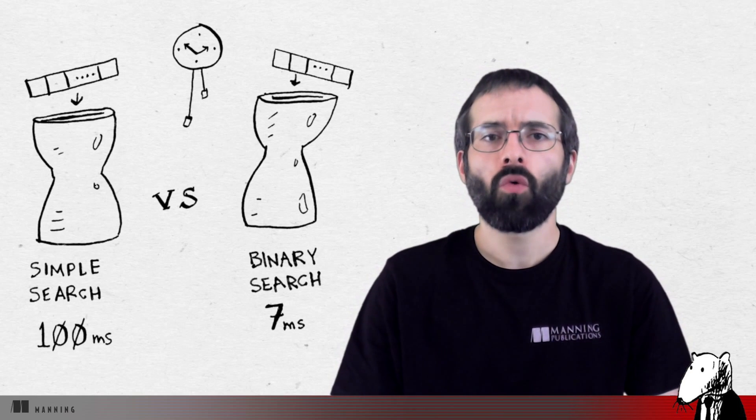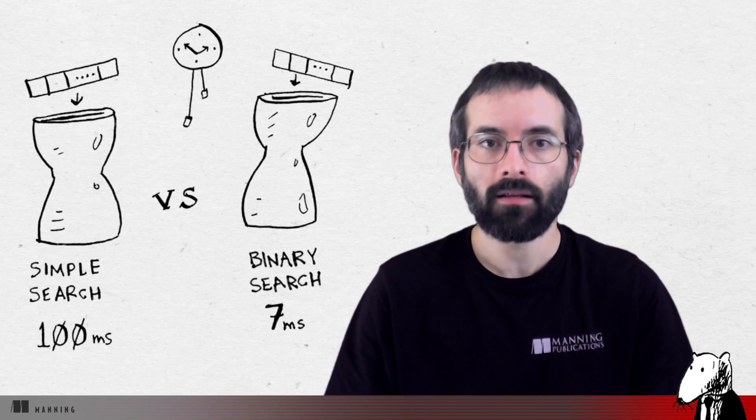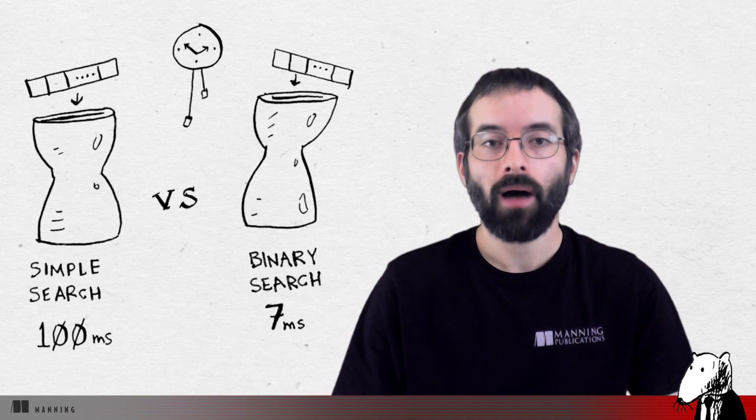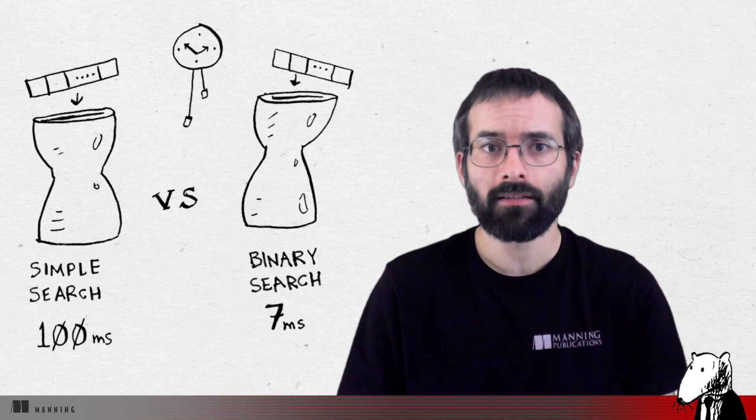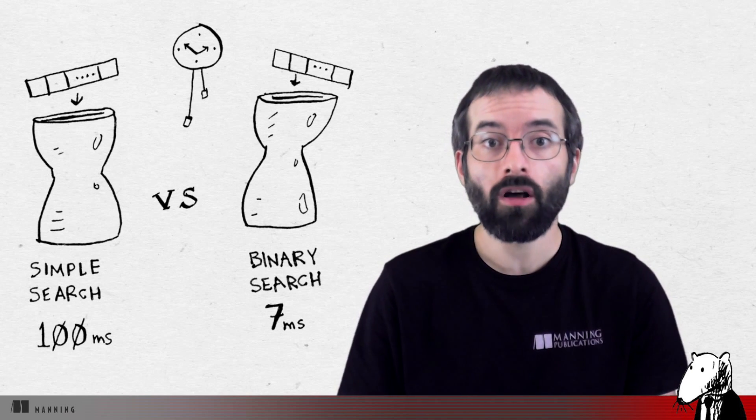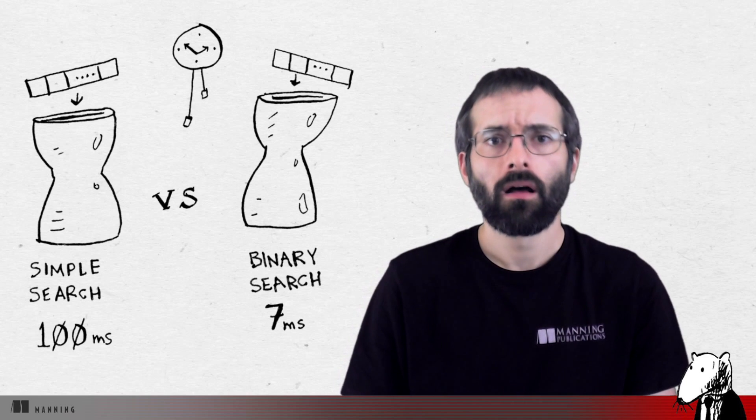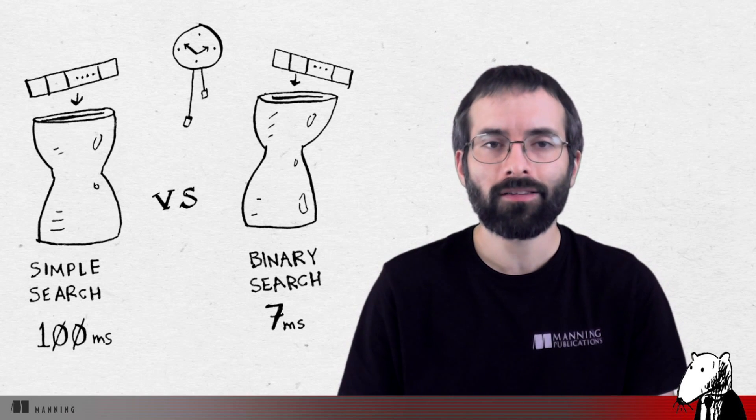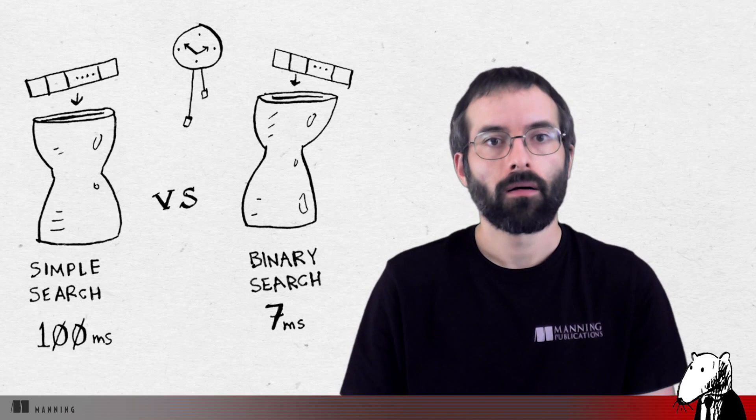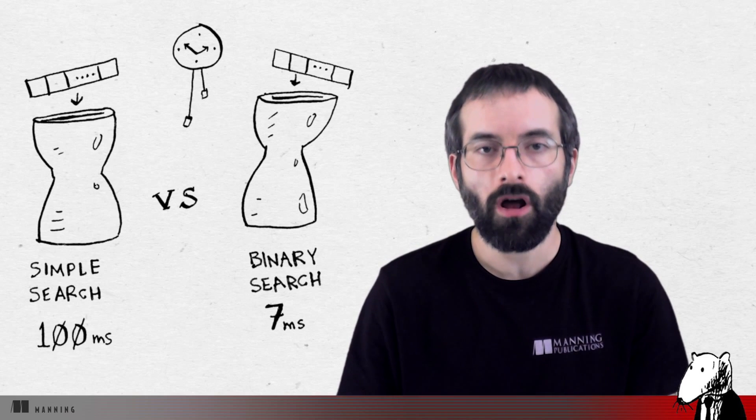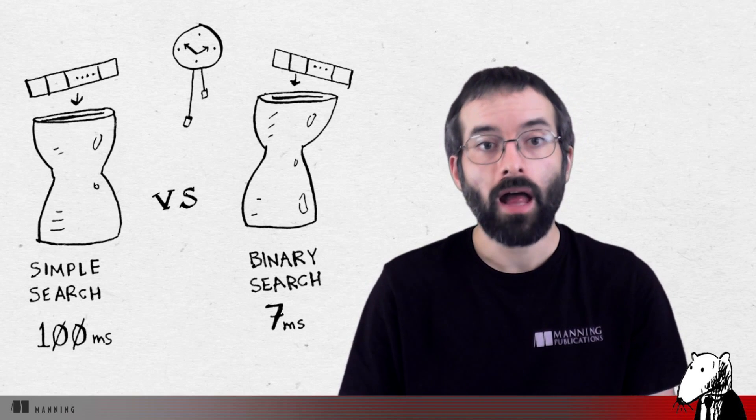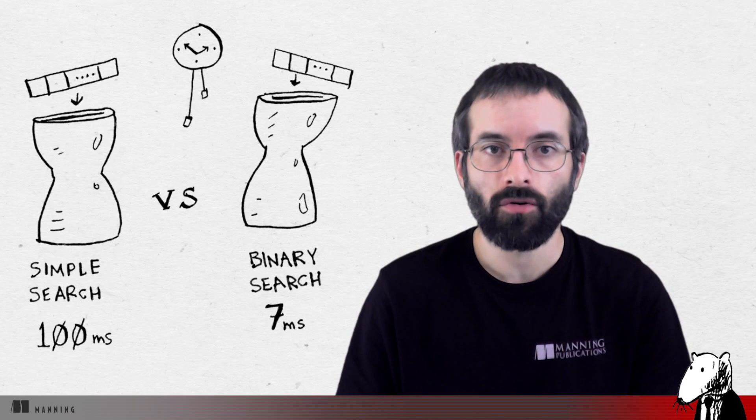Let's assume it takes one millisecond to check one element. With simple search, Bob has to check 100 elements, so the search takes 100 milliseconds to run. On the other hand, he only has to check seven elements with binary search, because log base two of 100 is about seven. So that search takes seven milliseconds to run.